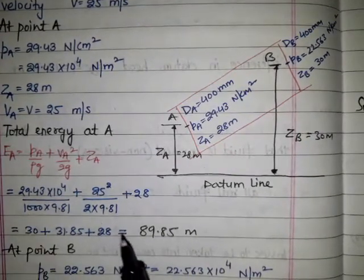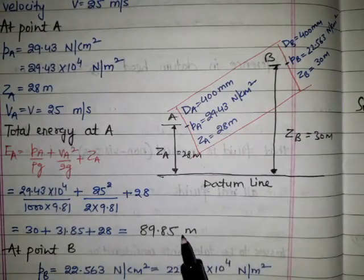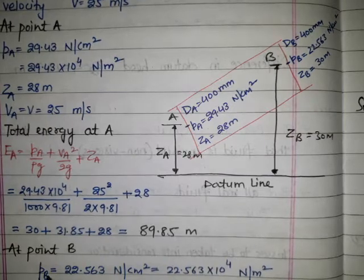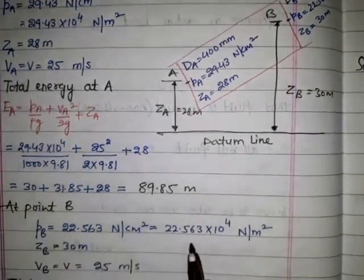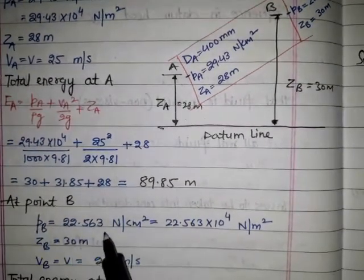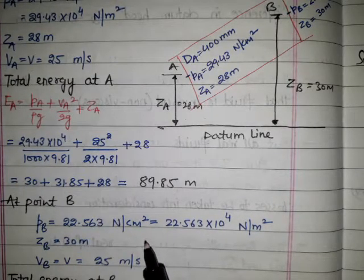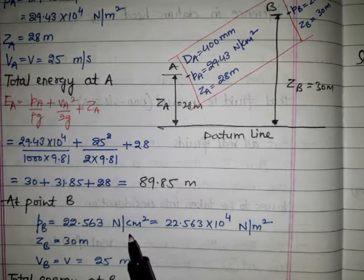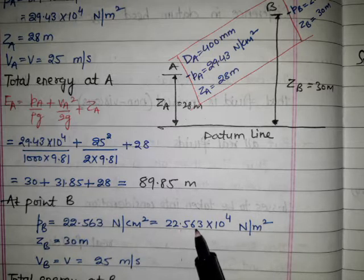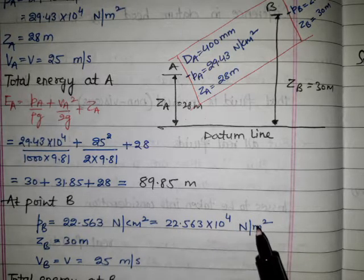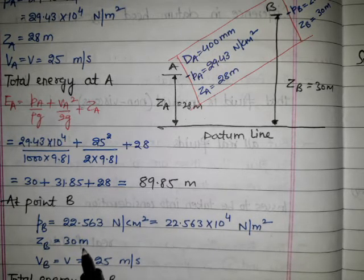We get E_A, the total energy at A, which is 89.85 meters. Similarly at point B, we have P_B = 22.563 Newton per centimeter square. Converting to Newton per meter square, it becomes 22.563 times 10 to the power 4. Z_B is 30 meters datum head.